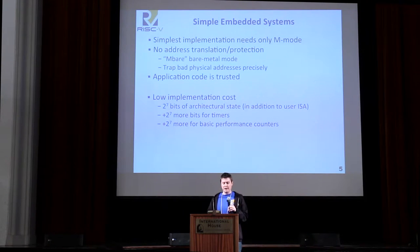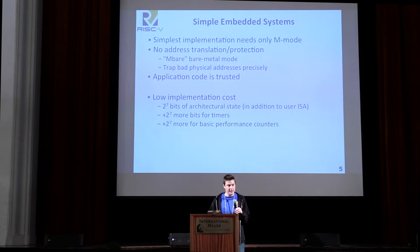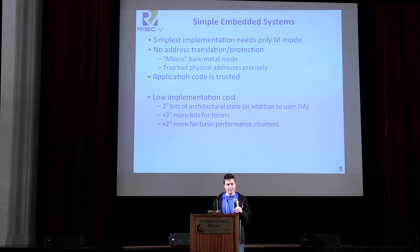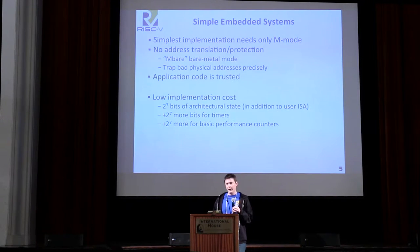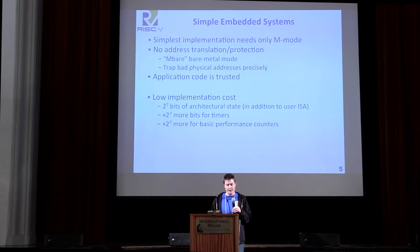Machine mode by itself is actually very cheap to implement. Using just the user ISA as a baseline, the only additional stuff you have to add is a handful of instructions and on the order of 100 bits of architectural state — that's what you need for basic trap handling, like the exception program counter and the bad virtual address. If you need timers and timer interrupts, there's another 100 bits or so of state, and a little more if you want basic performance counter facilities like instructions retired and cycle counts. So it's really not a whole lot of hardware.